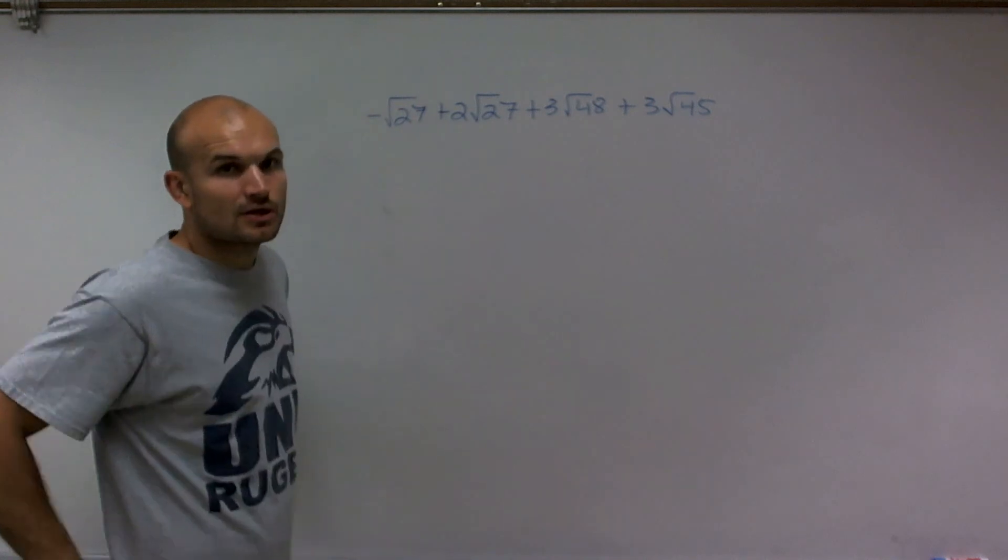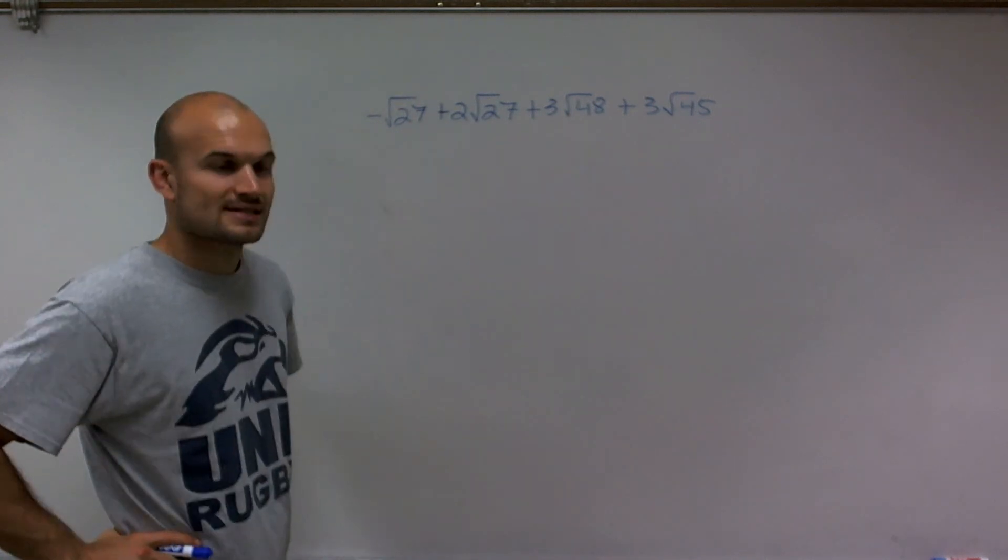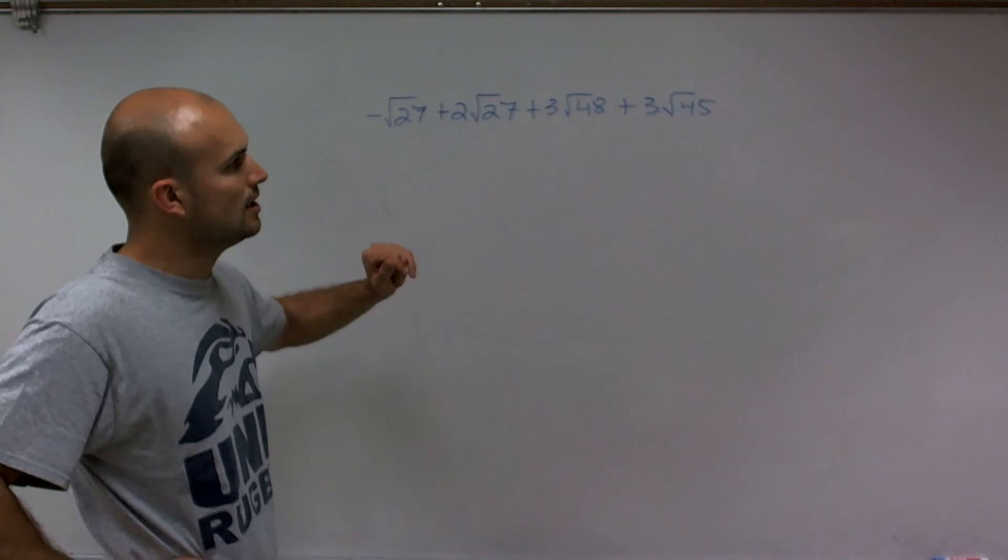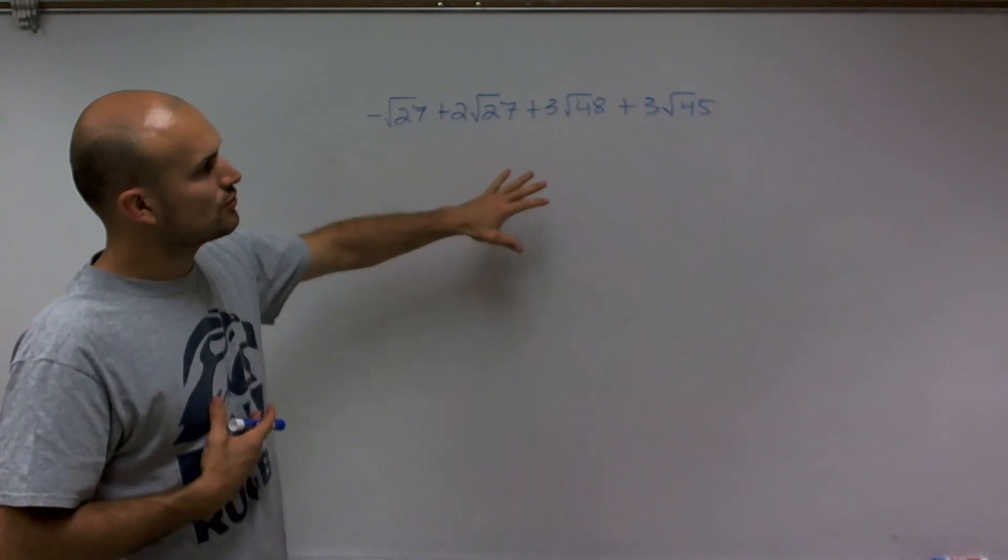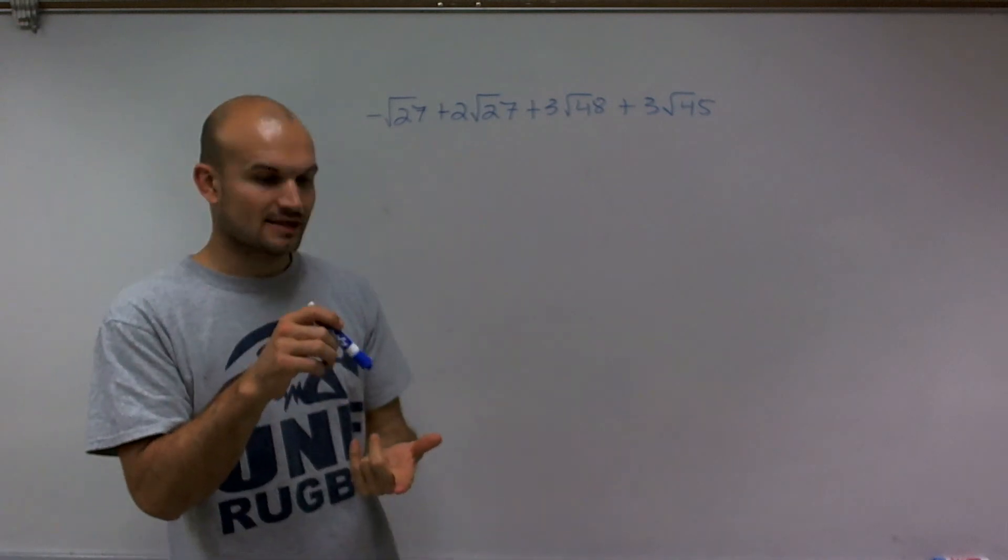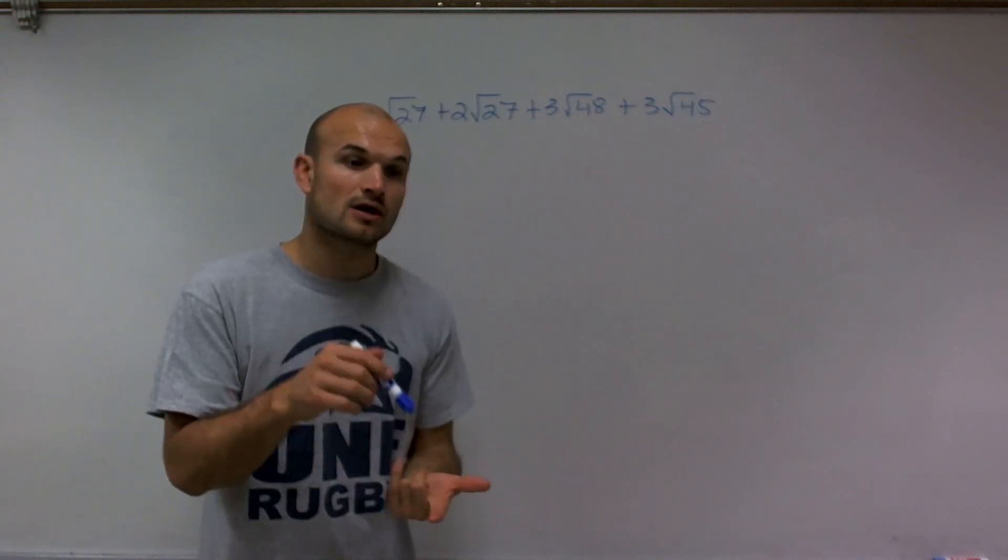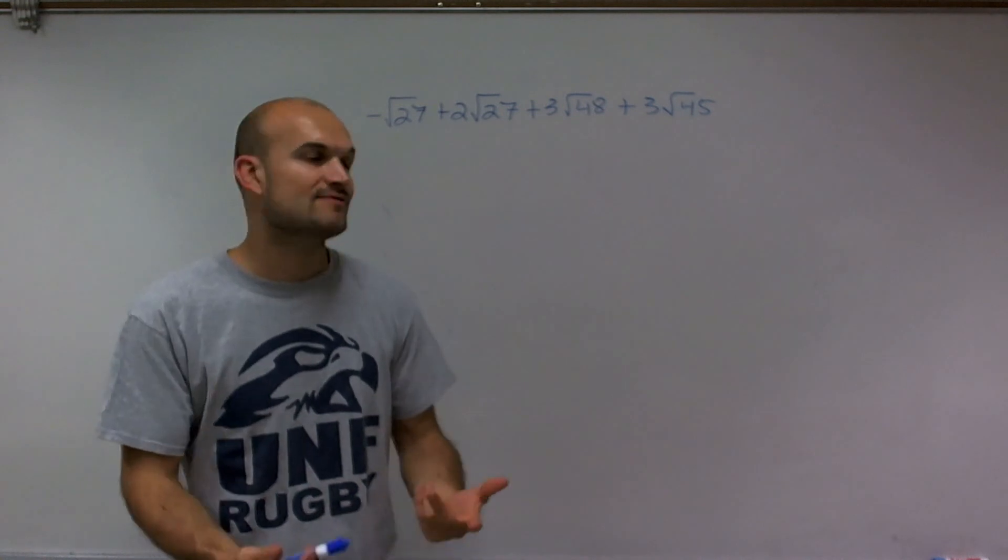So the first thing I'm going to look at is how can I simplify the square root of 27? Well, just to remind you again, we can always simplify our square roots by remembering that we can take the square root of our square numbers, which are 4, 9, 16, 25.